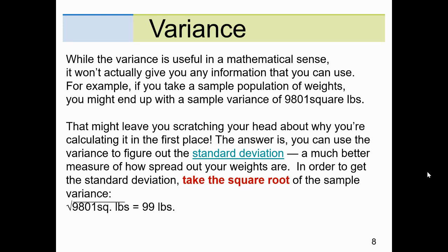The answer is that you can use this variance to calculate the standard deviation, which is a much better measure of how the spread of weights are. Here's the key: in order to get the standard deviation, you take the square root of the variance. So in reverse, if you know the standard deviation, you would square that to go back to the variance. Once again, your calculator will give you standard deviation. You will do the inverse operation, you will square it to give you an answer for the variance.